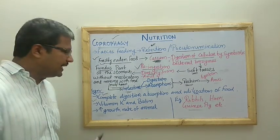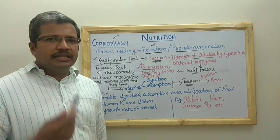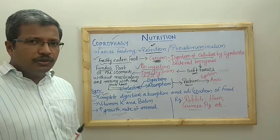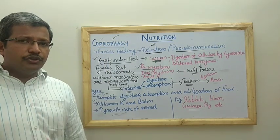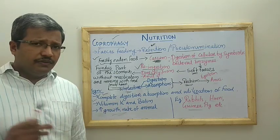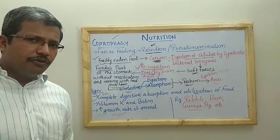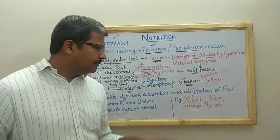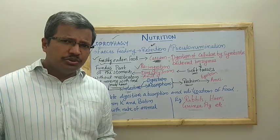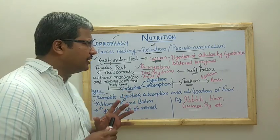Finally, since the organism is utilizing the maximum amount of food material taken, the growth rate of animals showing coprophagy will be increased. These are the three main significances of this process. The examples of organisms following coprophagy are rabbits, hares, guinea pigs, rodents, shrews, etc. These animals follow this particular mechanism of nutrition.